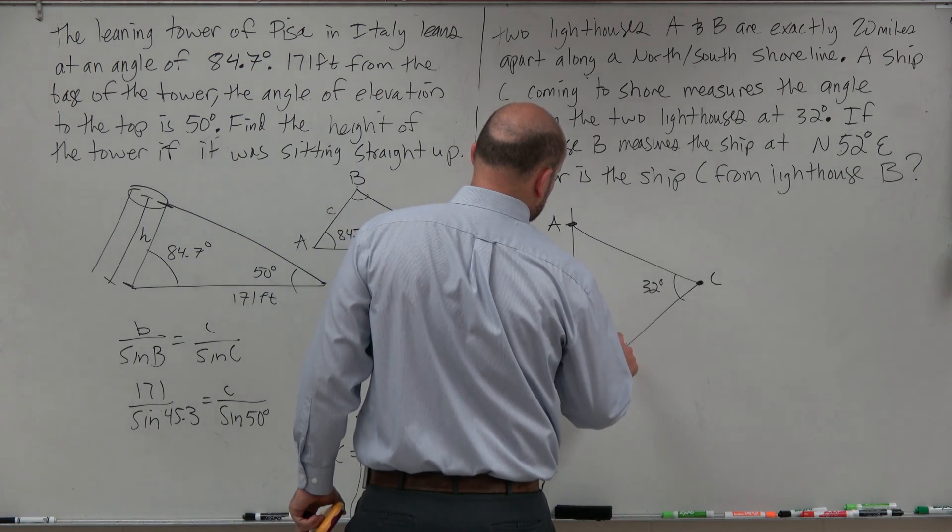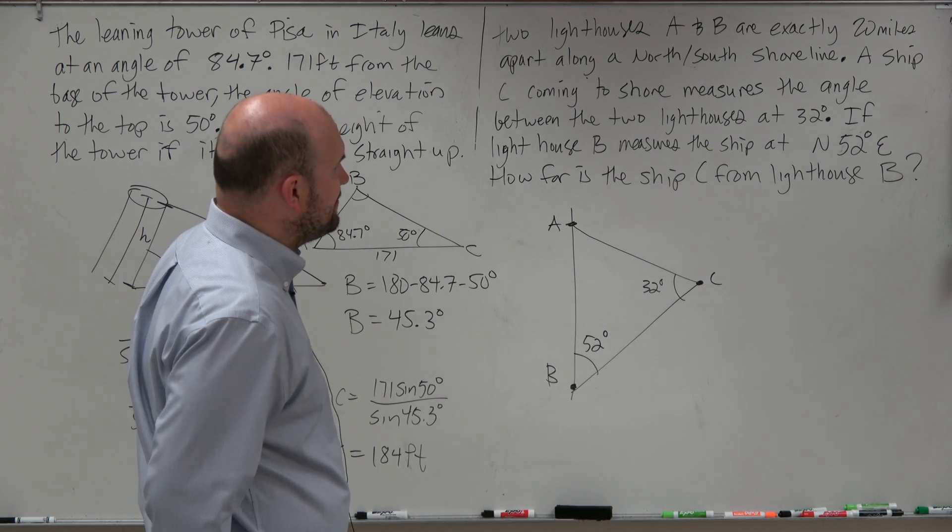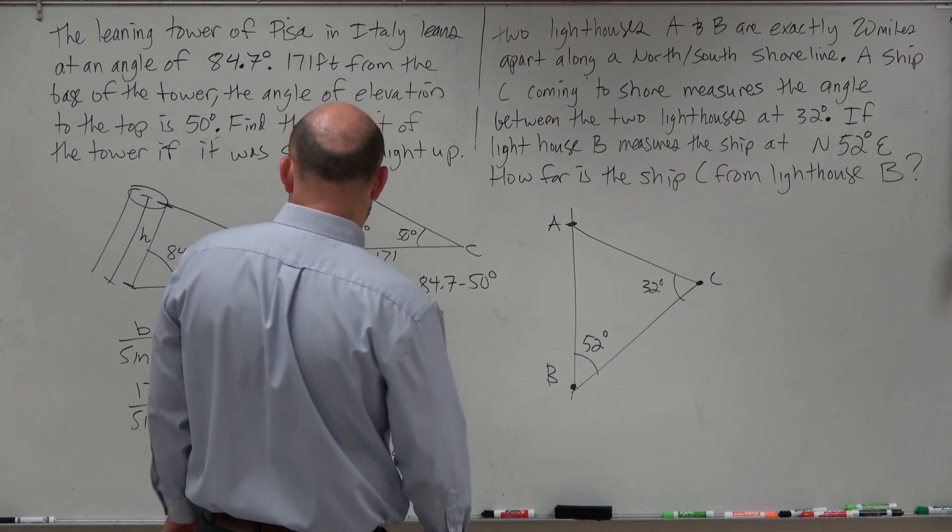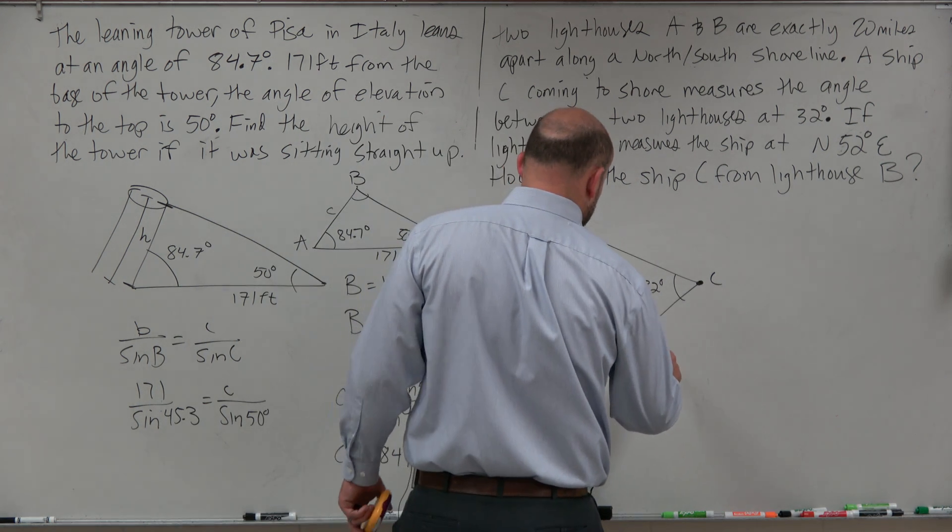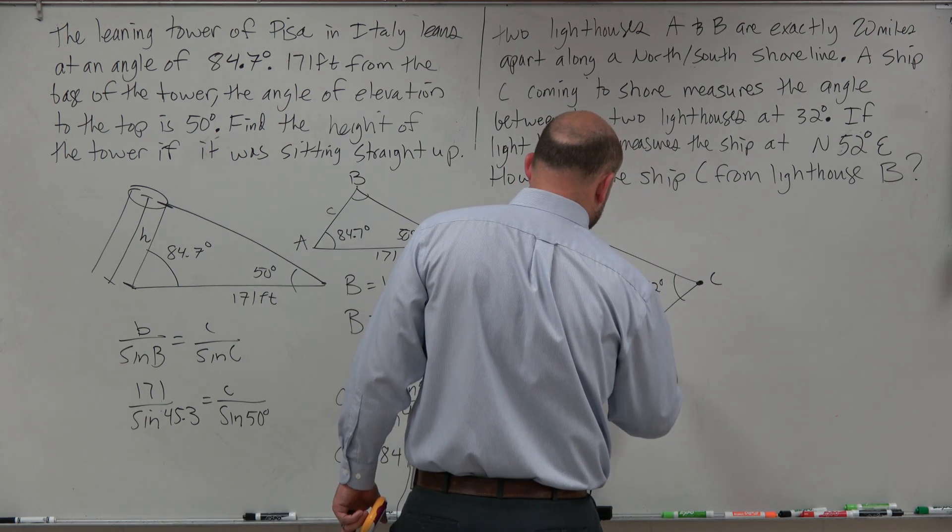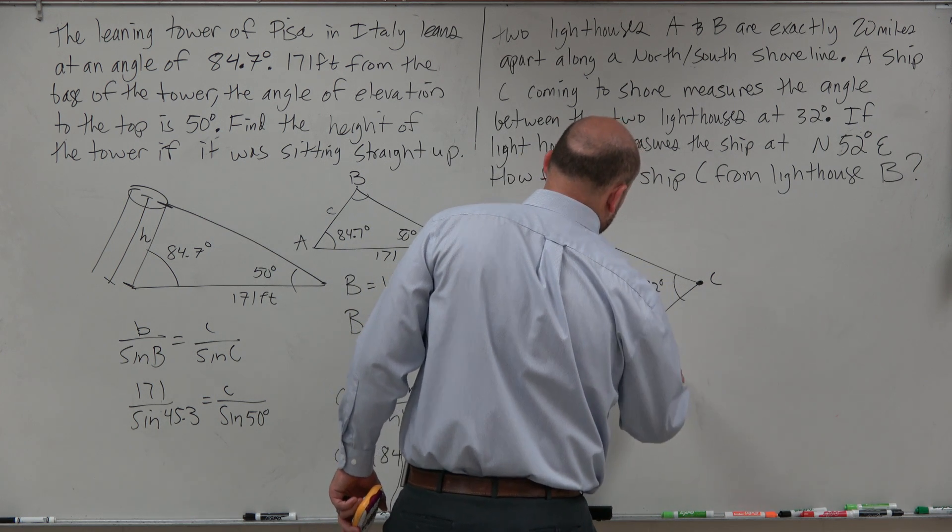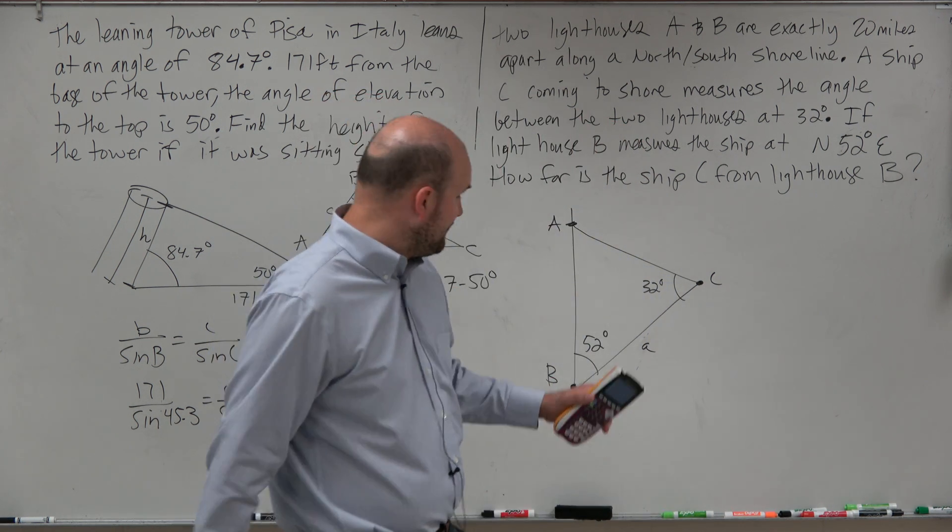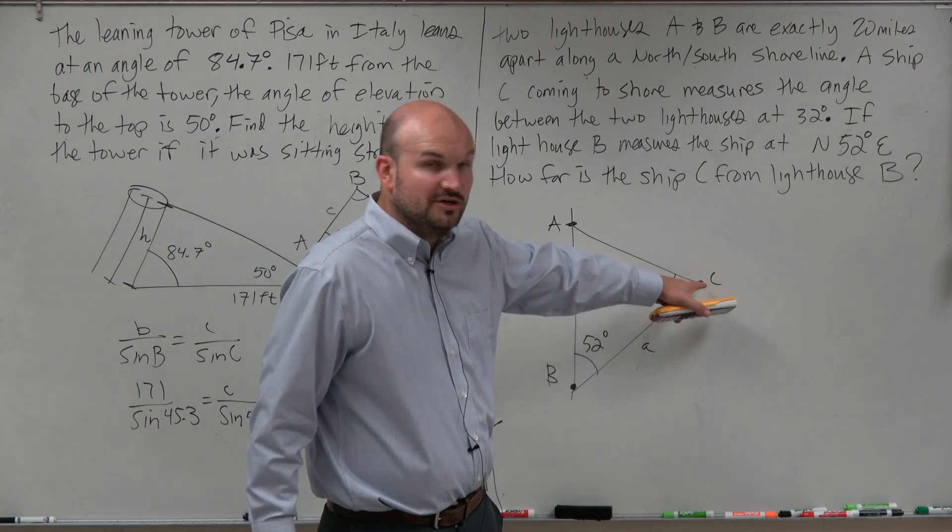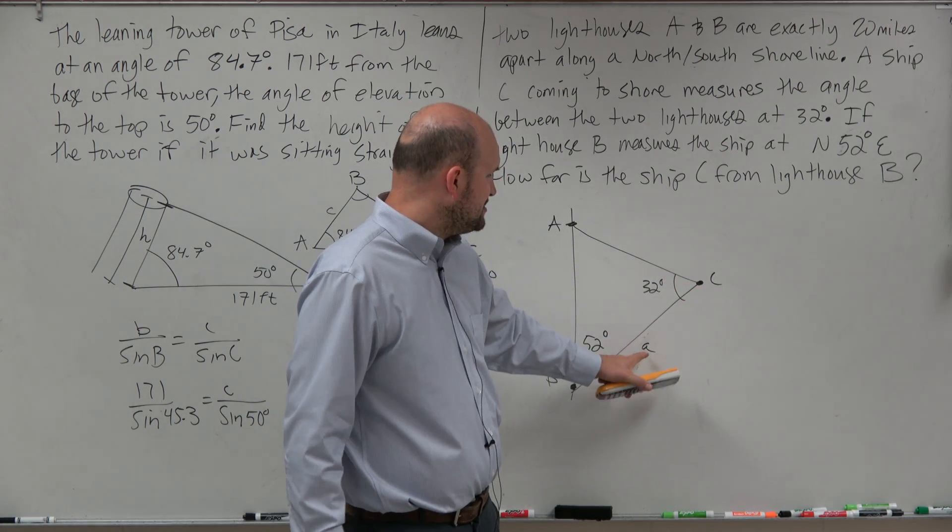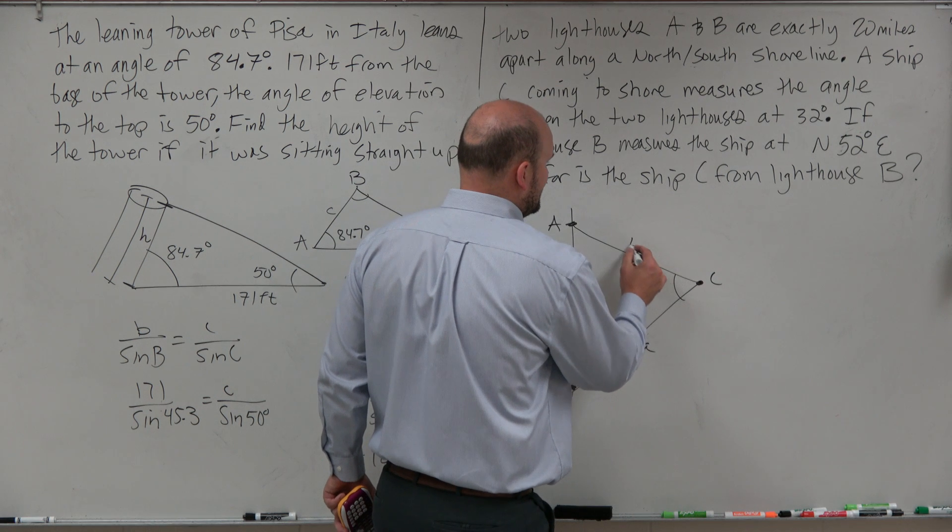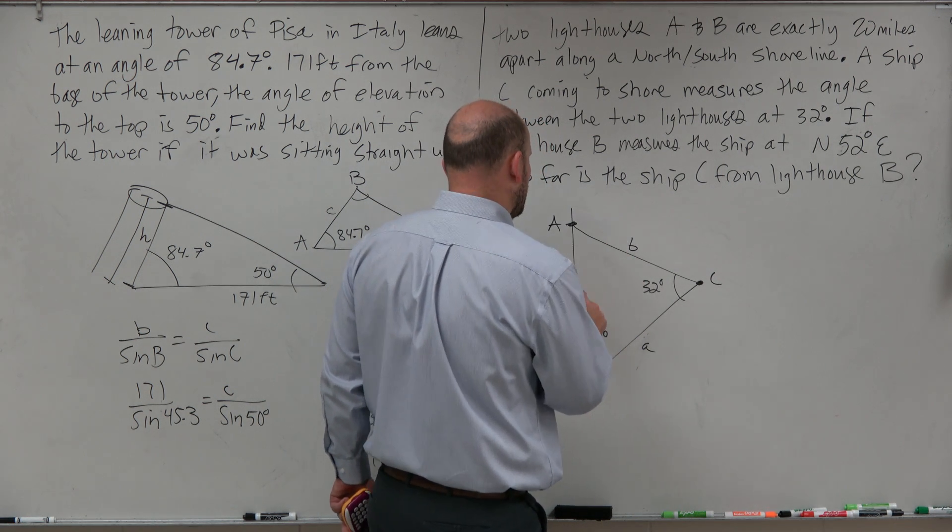How far is the ship from lighthouse B? So therefore, what we're looking for is this little length, which we'll call little A. Little A measures the distance from lighthouse B to my ship C. It might be confusing, but I don't want to call it little B, because technically, in oblique triangles, we call that little B, and this will be little C.